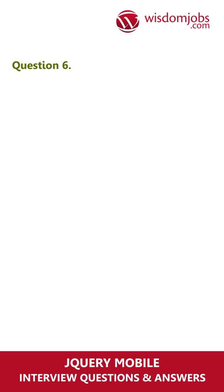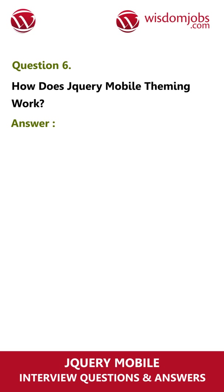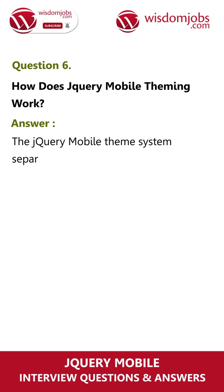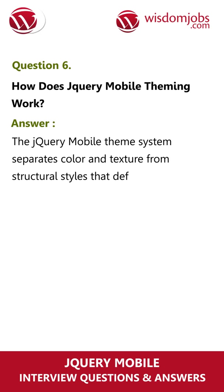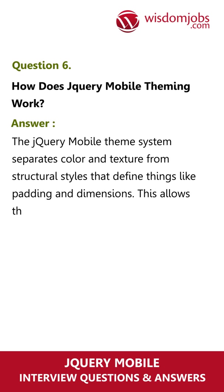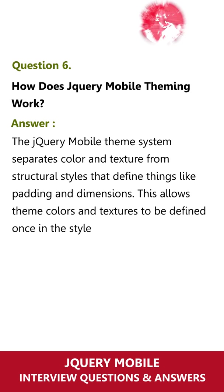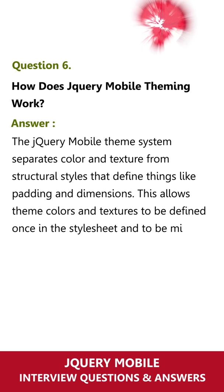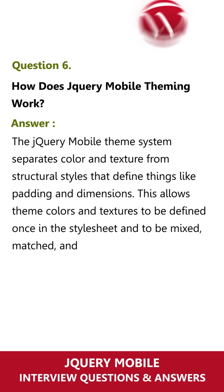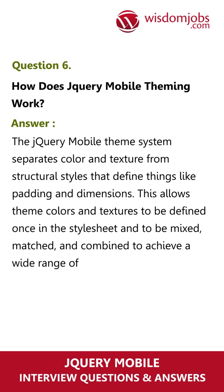Question 6. How does jQuery mobile theming work? The jQuery mobile theme system separates color and texture from structural styles that define things like padding and dimensions. This allows theme colors and textures to be defined once in the style sheet and to be mixed, matched, and combined to achieve a wide range of visual effects.